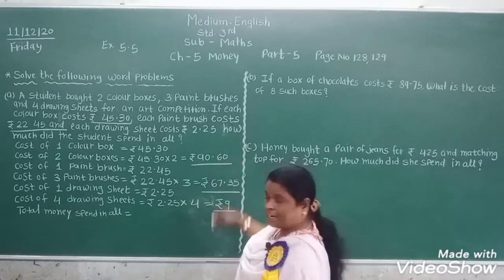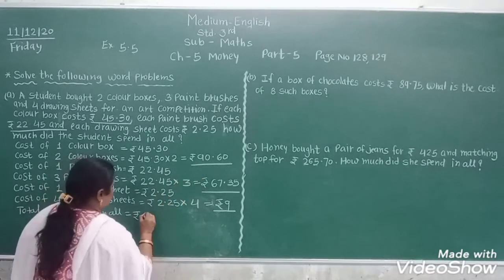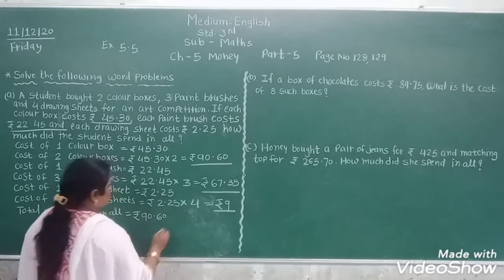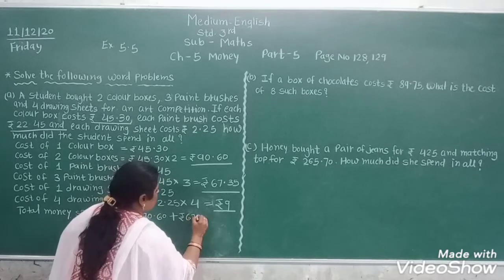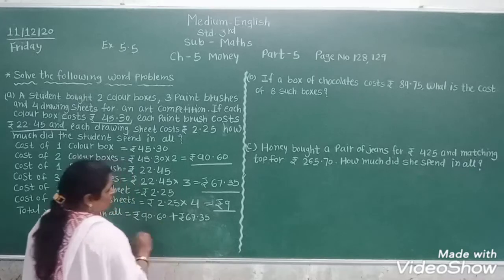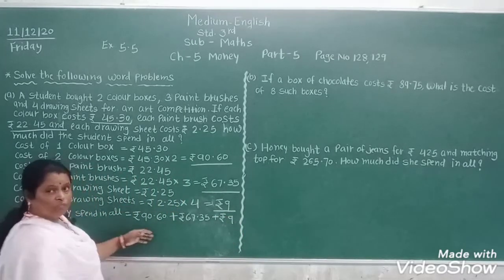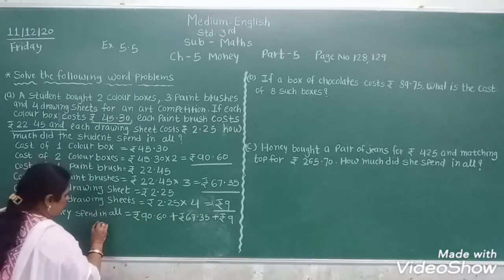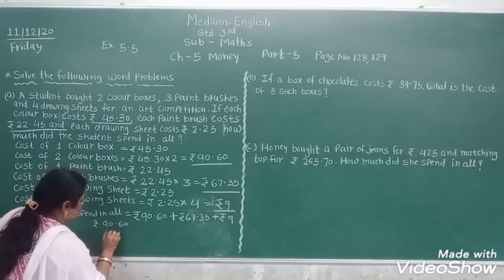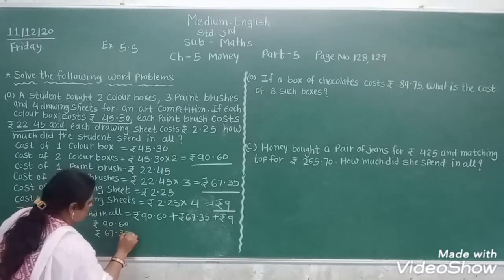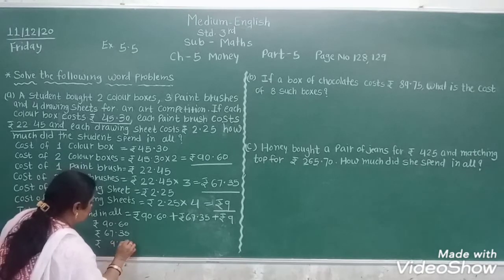Students, we will add all the cost items. Total money spent: Rs. 90.60 plus Rs. 67.35 plus Rs. 9.00. We write paise as 0 0 where not given.